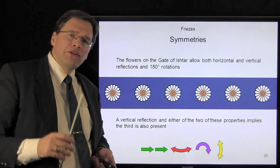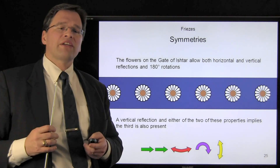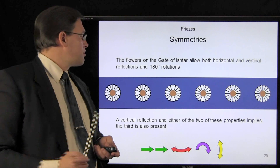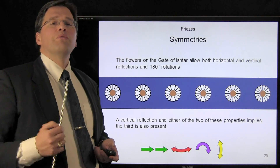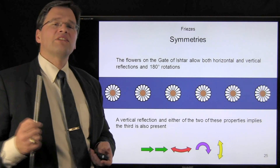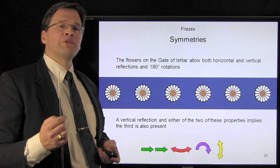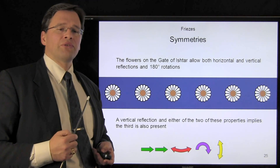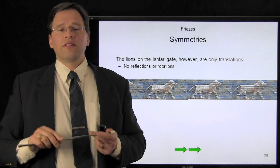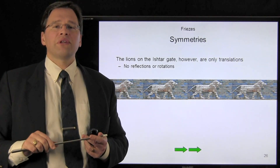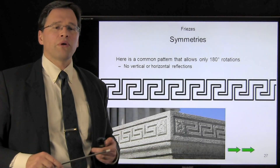One thing you might notice is that if you have vertical symmetry or a vertical reflection and either horizontal symmetry or rotational symmetry, you must have the other as well. It is not possible to have a frieze that has vertical symmetry and horizontal symmetry without rotational symmetry. The lions on the Ishtar Gate, on the other hand, do not have any symmetries other than translational symmetry — there are no reflections nor rotations possible.